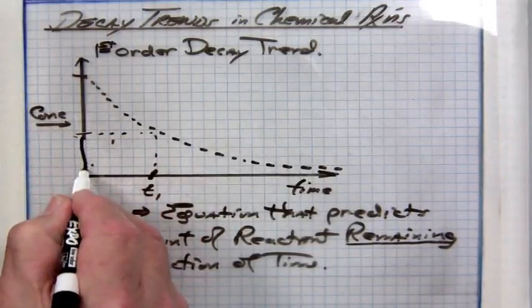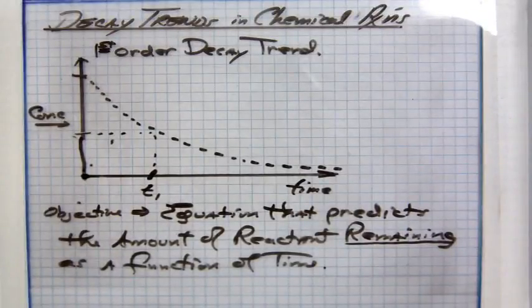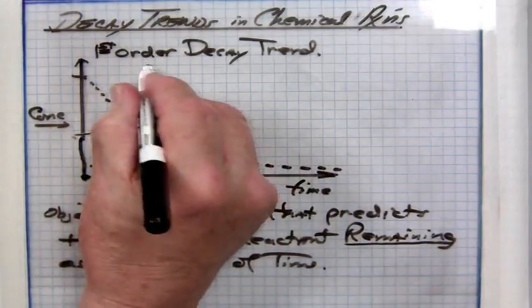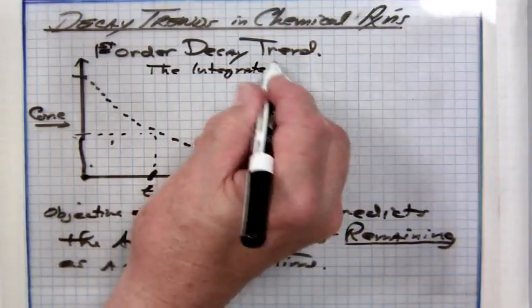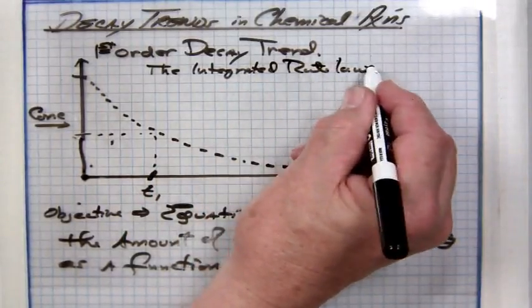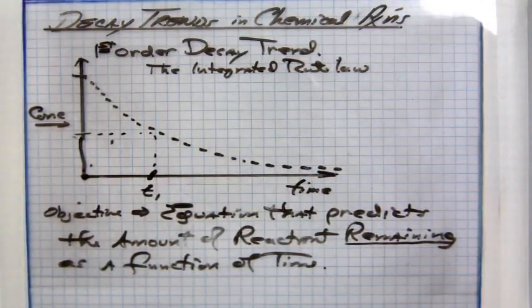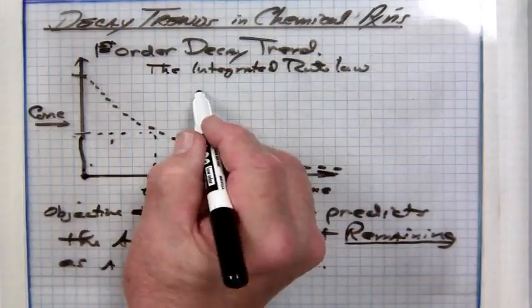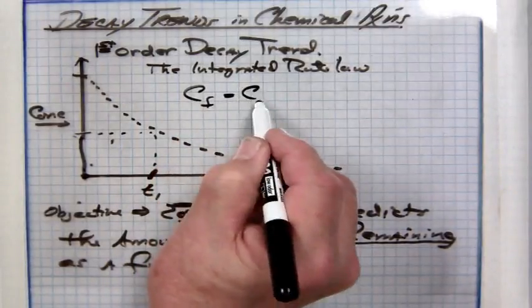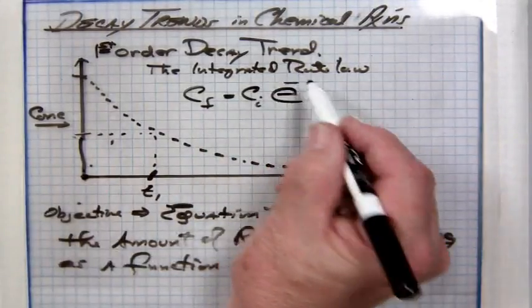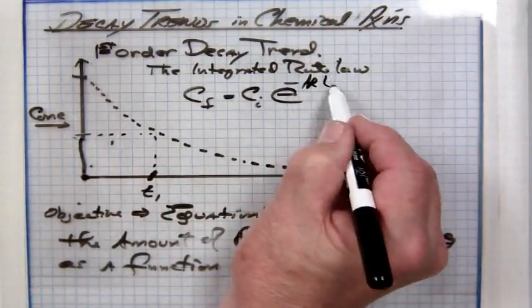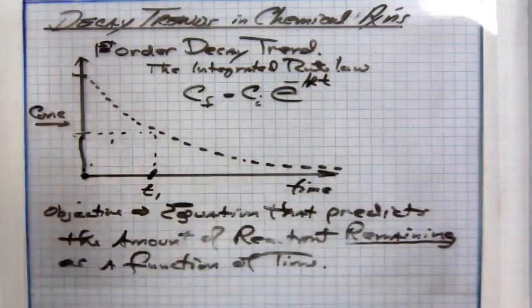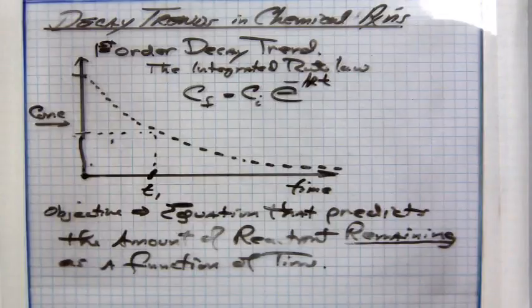Out of this, the concept of rate generates what we call the integrated rate law. It is a simple calculus derivation that is applied to the definition of rate of reaction. What comes out of this is the first order decay equation — you can derive one for each order, but we're only interested in the first order. It turns out to be C-final equals C-initial, what you begin with, times E — the base of the natural log — to the negative K, the rate constant, times whatever time is involved in the reaction. This is called a first order decay equation, the first order decay trend.